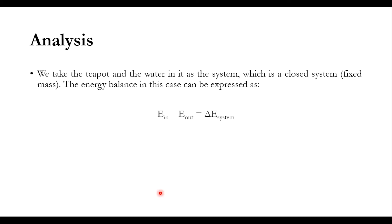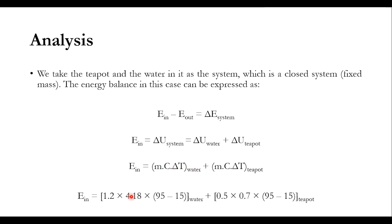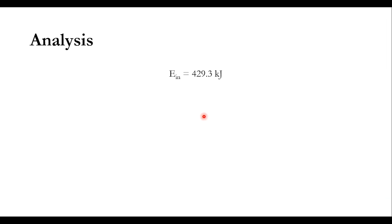For the analysis, the overall energy balance of the system is: E-in minus E-out equals delta E of the system. Since there is no heat loss, E-in equals delta U, which includes both water and teapot. Delta U is calculated as M·C·DT for water plus M·C·DT for the teapot. So: 1.2 × 4.18 × (95−15) for water, plus 0.5 × 0.7 × (95−15) for the teapot, giving E-in equal to 429.3 kJ.